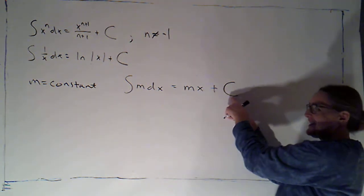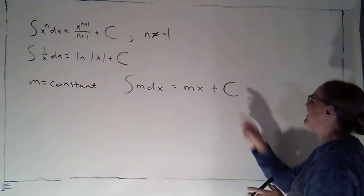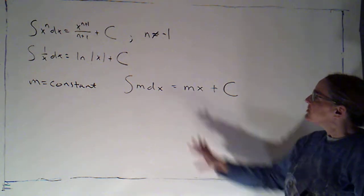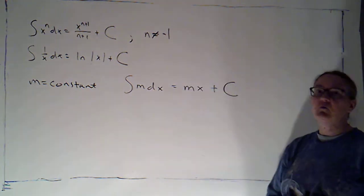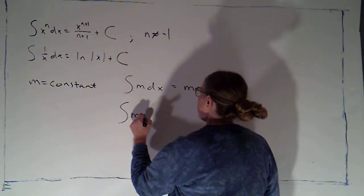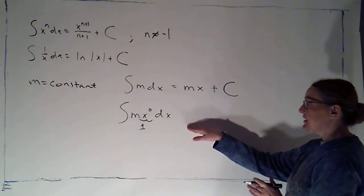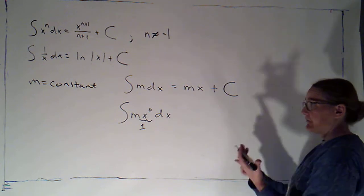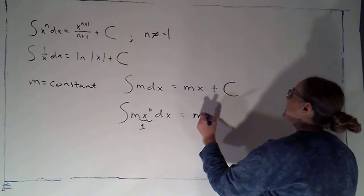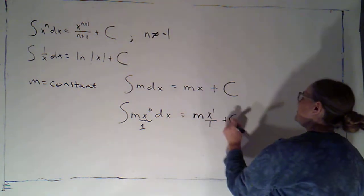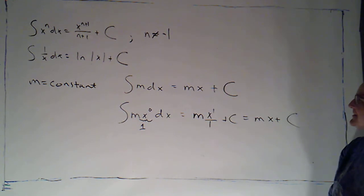If I were to call that constant b instead of c, I'd say I'm getting a line of slope m — mx plus b. I like to think of that as a geometric argument: if I have a constant, I'm just going to get a line with that slope. We can also view this as m copies of x to the 0, using the constant multiple rule and the power rule, giving m times x to the first over 1 plus c, which is mx plus c. So however you want to get there, if you integrate a constant, you get that constant times x plus c.